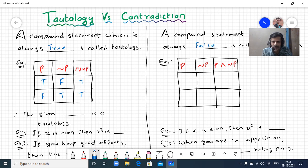Here, last column you observe it is always true. Therefore, this given compound statement P or negation P is a tautology.